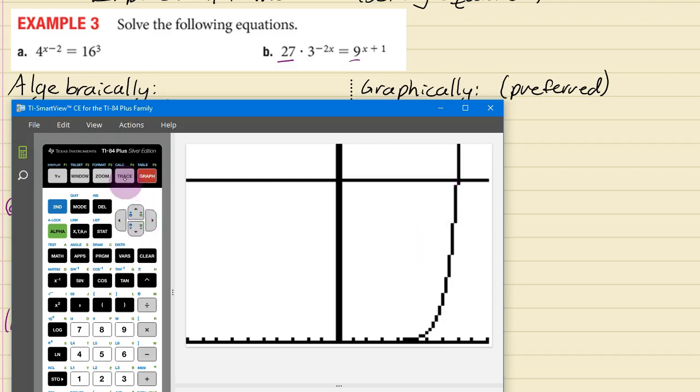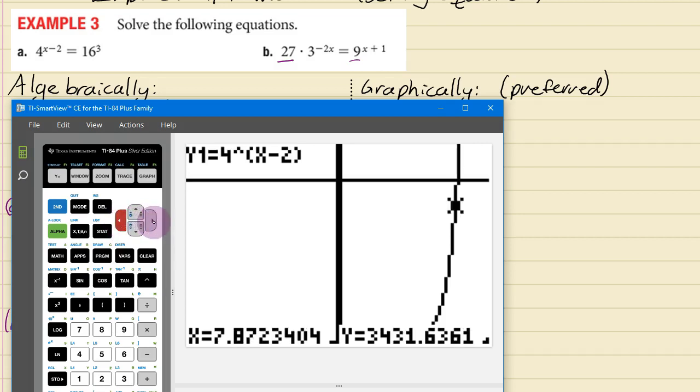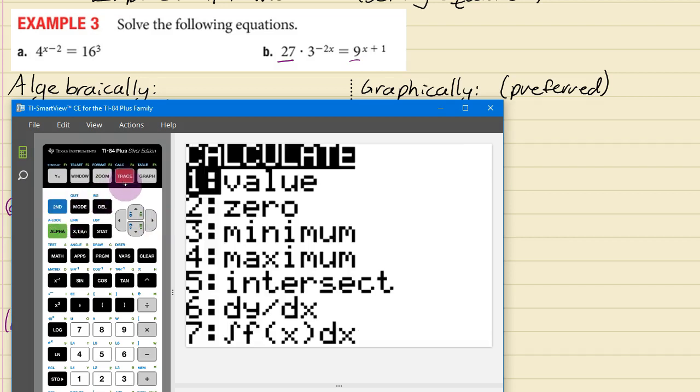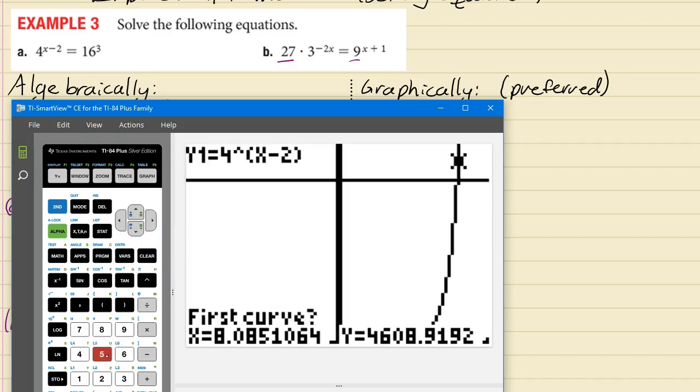And you could try to trace over there. Tracing though a lot of the time doesn't work very well because you're plugging in these weird x coordinates. And as you can see here we can't get exactly to the right spot because of the way the resolution is. So you do second calc intersect like so.